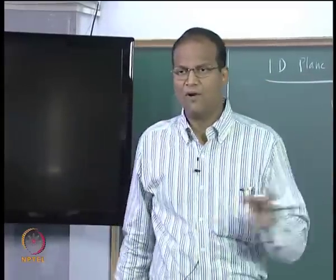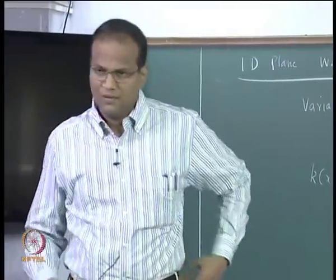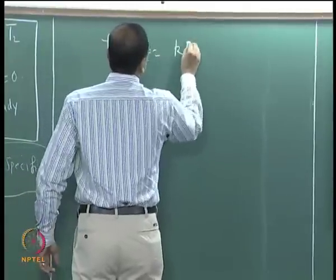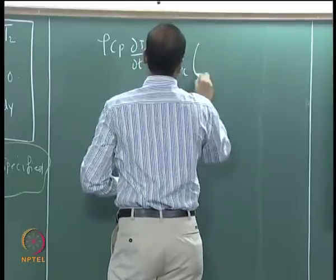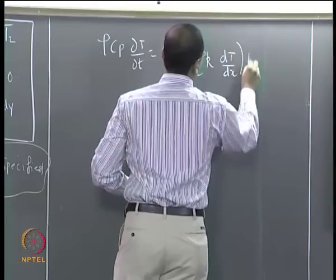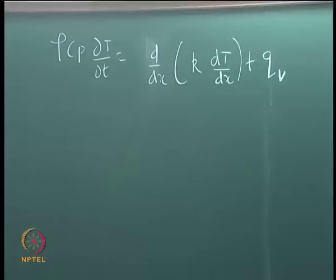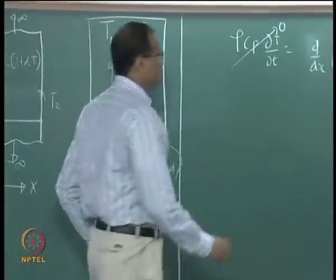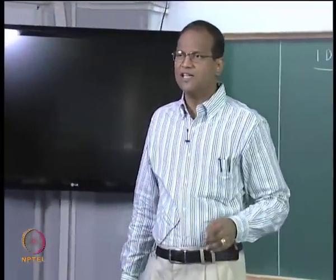So, we have used q_v sometimes, sometimes I use q triple prime, whichever you prefer you use. Basically, it is watts per meter cube. I told you it is steady, so this term gets knocked off. I also told you q_v equal to 0, so the two terms get knocked off. Unfortunately, I cannot take k out of the differential because k is a function of temperature. Therefore, d by dx of k dT by dx equals 0.